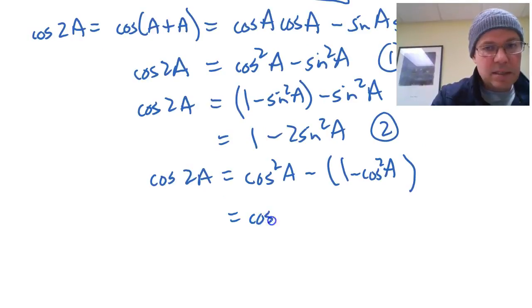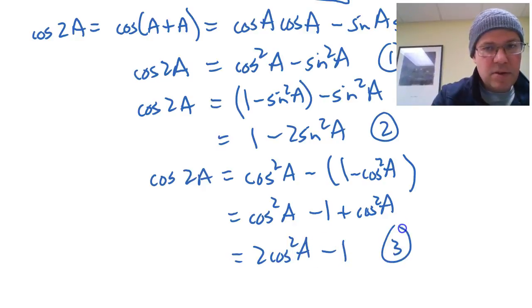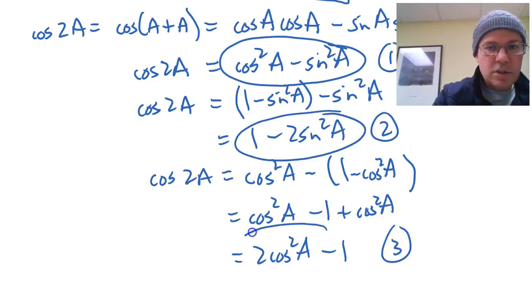And what we get is cos squared A minus one, and then negative times the negative makes a positive cos squared A. And hence I get 2 cos squared A minus one, and that's my third equation. So we end up with three equations for cos 2A.